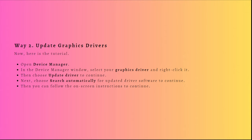Then choose Search Automatically for Updated Driver Software and follow the on-screen instructions. When all steps are finished, reboot your computer and check whether the Rust not responding error is fixed. Remember that you can always pause this video and follow the steps at your own time.